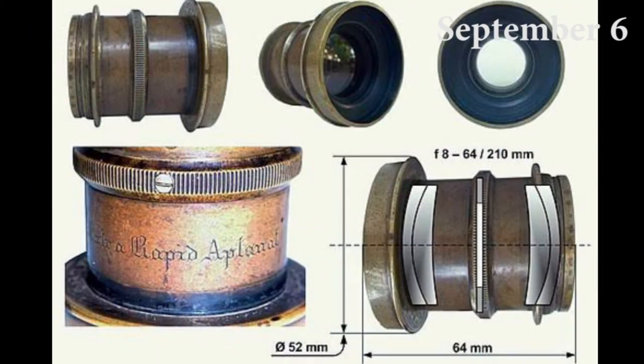The rapid rectilinear, also named Aplanet, is a famous photographic lens. It is a lens that is symmetrical about its aperture stop with 4 elements in 2 groups. The symmetry of the design greatly reduces radial distortion. Distortion is nothing but the deviation in the shape.